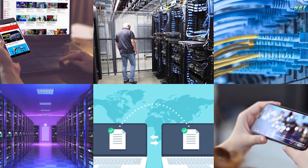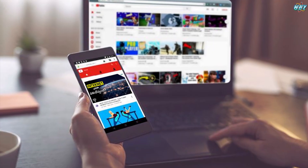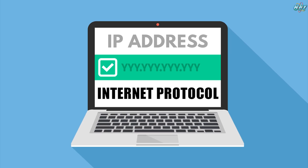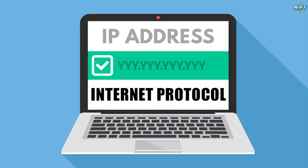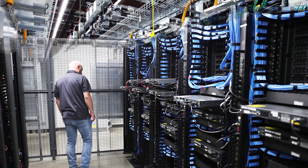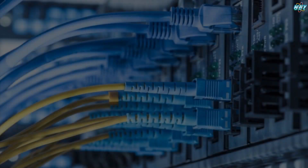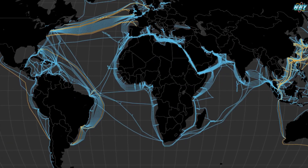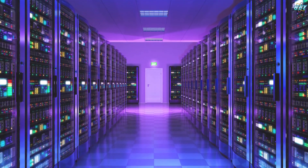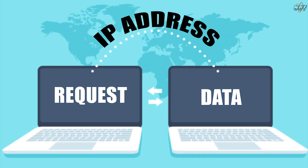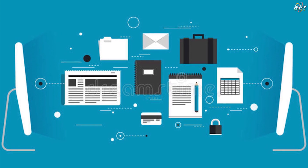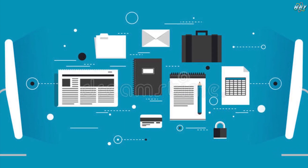When you click on YouTube, your device's IP address sends a request through your network to the Tier 3 data center, then to the Tier 2 network, then to the Tier 1 network, and finally reaches the server to transfer the information back to you.